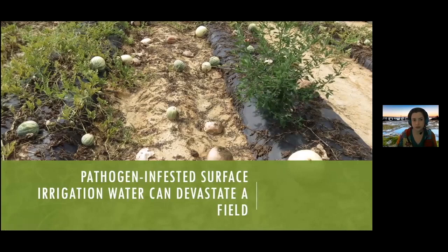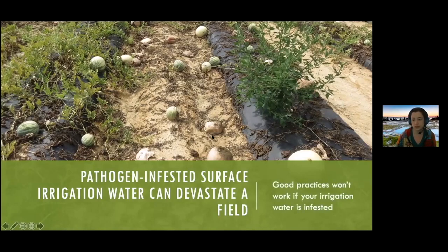Irrigation water is a real concern. If you're using ponds, creeks, or any kind of surface water, this is something to keep in mind — they can become infested. If you overhead irrigate your entire field with infested water, it essentially melts. So if your irrigation water is infested, you're negating every other good thing you're doing with mulch, raised beds, and your spray programs.